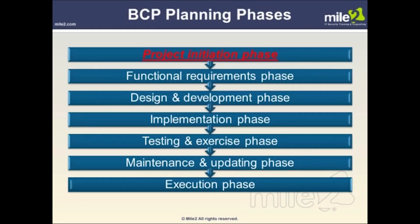Now let's move into the meat of the course. There are seven widely accepted phases to business continuity planning: 1. Project initiation phase. 2. Functional requirements phase. 3. Design and development phase. 4. Implementation phase. 5. Testing and exercising phase. 6. Maintenance and updating phase. 7. Execution phase. Our discussion will begin at the top with the project initiation phase.